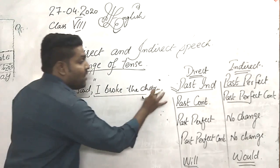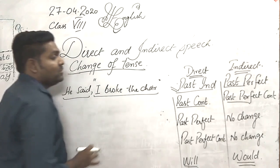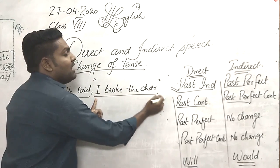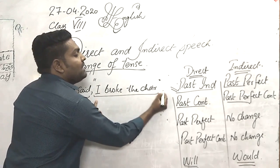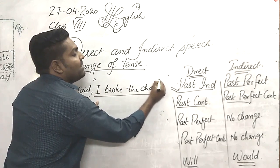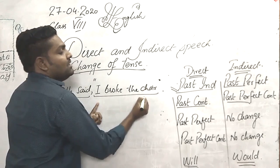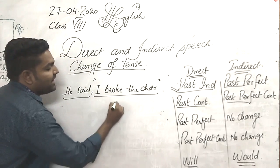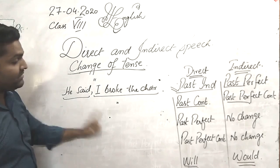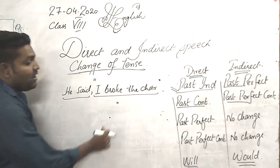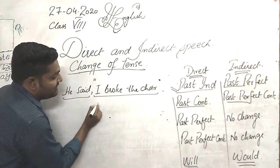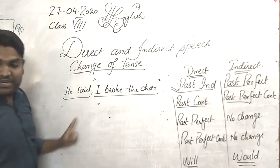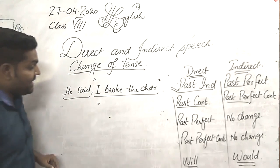One important thing — always use a full stop after the inverted commas. Sometimes it happens that we write the full stop and then put the inverted commas after it. That is wrong. Always put the inverted commas before the full stop. This is very, very important.